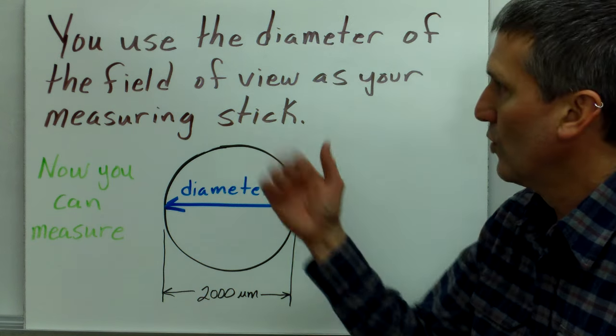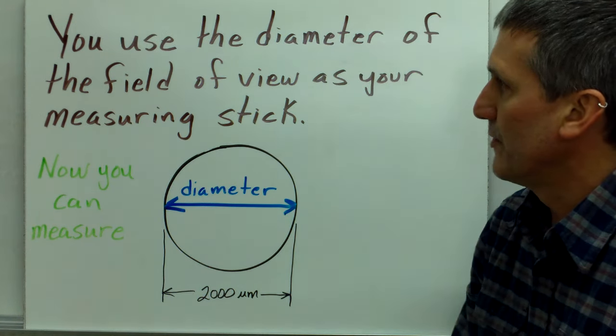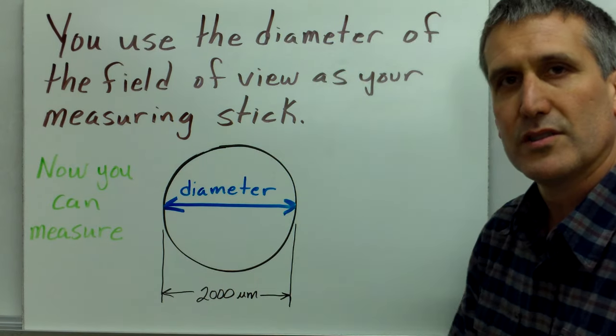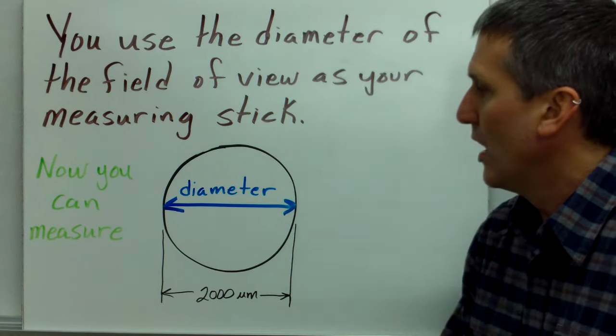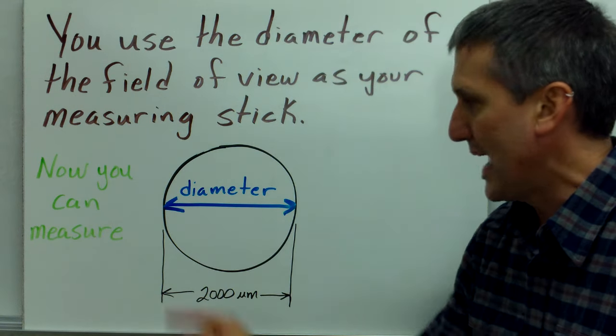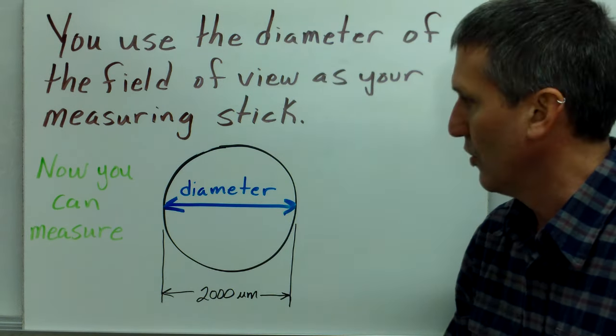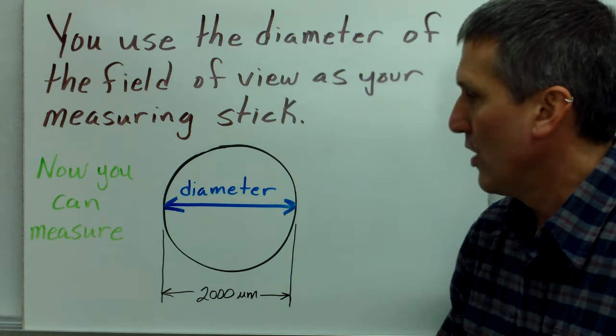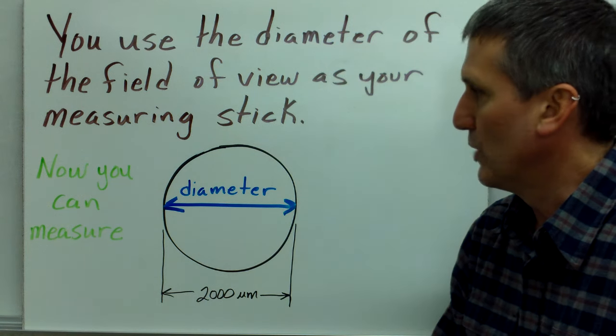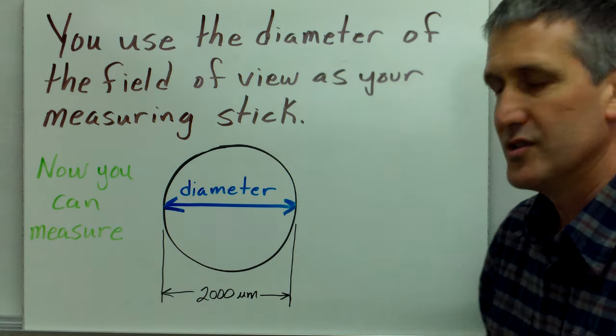So the way we do it is you use the diameter of the field of view as your measuring stick. So when you look through the microscope, you'll see the diameter of the field of view, and remember the diameter is right across the middle passing through the center of the circle. And if we know how large the diameter is, then we have something to measure with. Now you can measure.